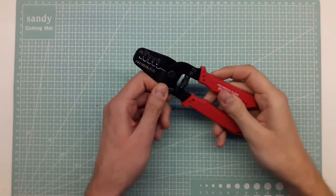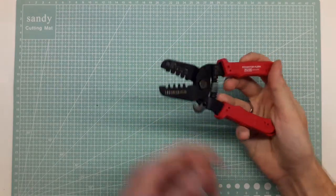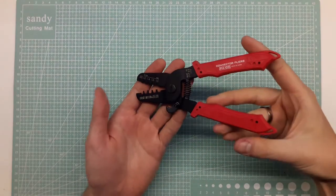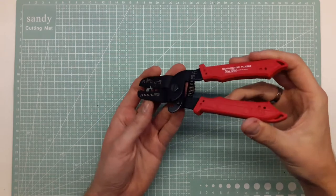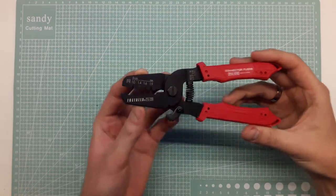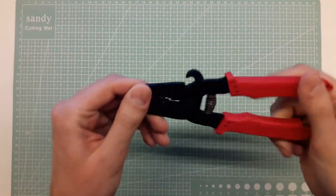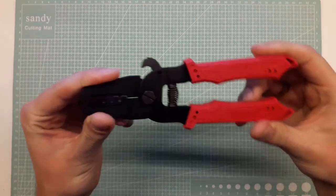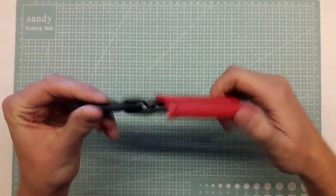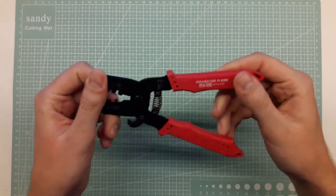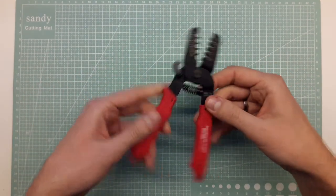This is a crimper for probably the smallest crimps you can find for JST connectors and such. It's made by Engineer as I said and it's similar to the knippers and the long nose pliers I showed you the other day.